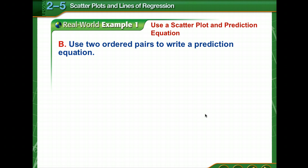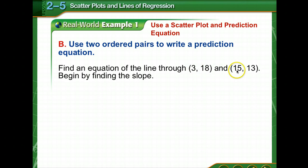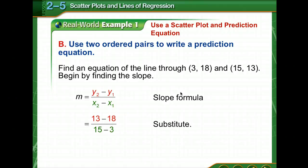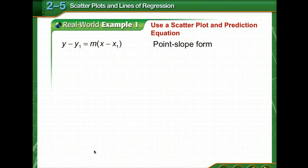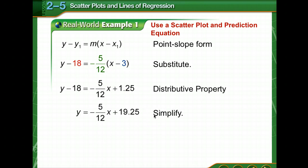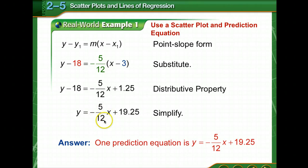So we're going to use two ordered pairs to write a prediction equation. We're going to use those two points that we showed at the very beginning of the graph and at the end of the graph that fit the line. We have to find the slope between those two points. So we have a negative 5/12. And notice we had a negative correlation, right? So we're expecting a negative slope. Now using point-slope form, you can choose either one of those points and then the slope defined. This is called the prediction equation.